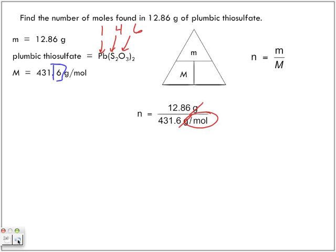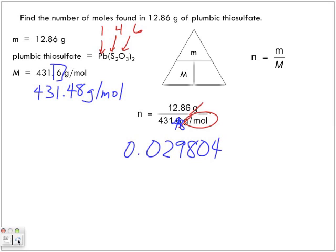Okay, so 431.48 grams per mole, so that's what we're going to put in here. Grams per mole. Sorry for the mess. And what do we get when we divide those two? Give me as many numbers as possible. And I'll tell you when to stop. So 0.02980.43. That's good. And it's moles.